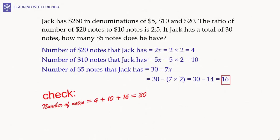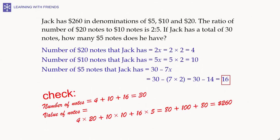Let's do a quick check. The total number of notes is 4 plus 10 plus 16, which equals 30 — indeed the total number of notes Jack has. The total value is 4 notes of 20 dollars (4 × 20), plus 10 notes of 10 dollars (10 × 10), plus 16 notes of 5 dollars (16 × 5), giving 80 plus 100 plus 80.